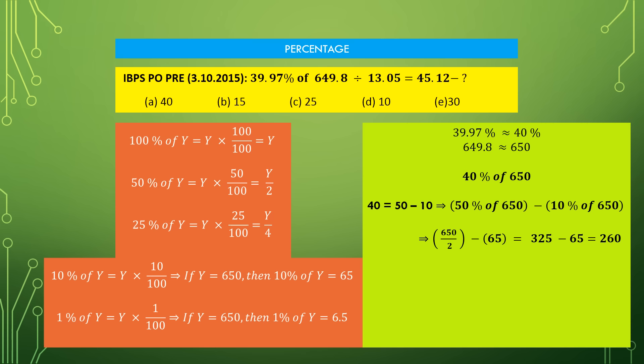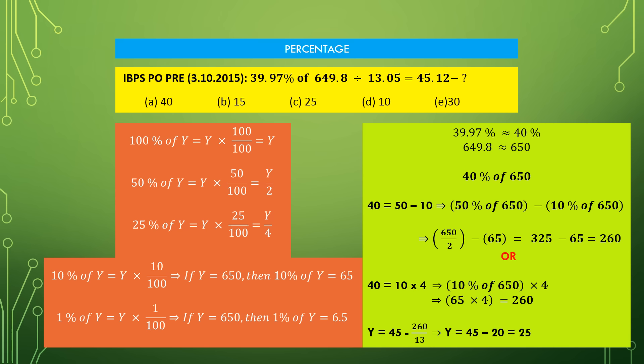The problem with this method is that we have to do division and subtraction, but most of us are more comfortable with multiplication and addition. So instead, 40 can be written as 10 into 4. Therefore, 40% of 650 can be written as 10% of 650 multiplied by 4, that is 65 multiplied by 4 equals 260. The results are the same. In my view, it is easier to use multiplication and addition than division and subtraction. The final result is Y equals 45 minus 20 equals 25.